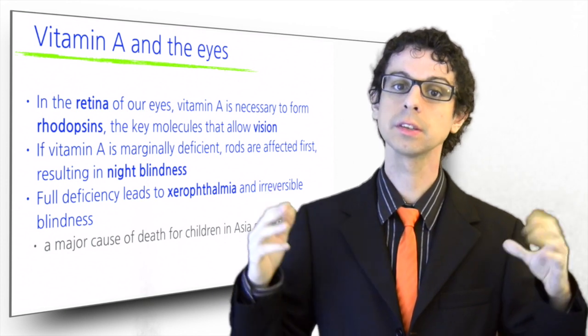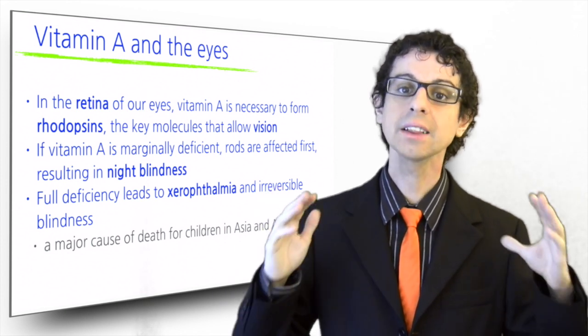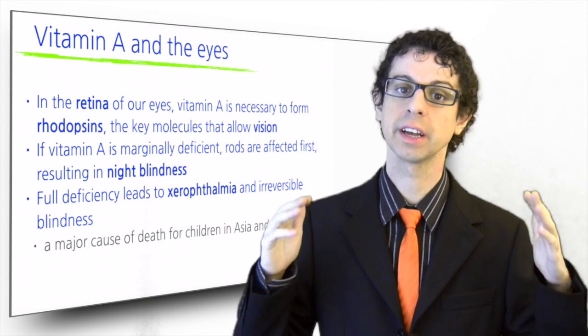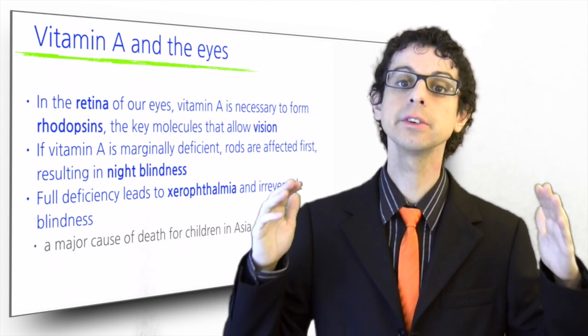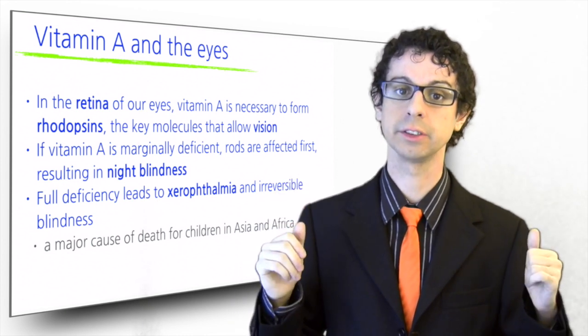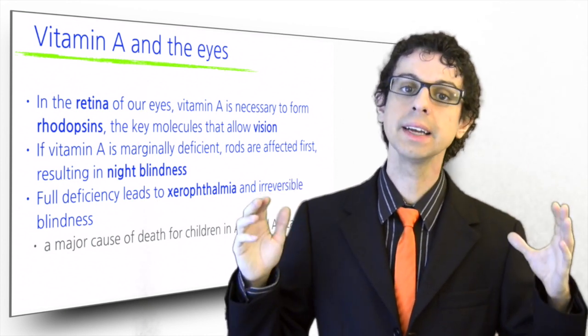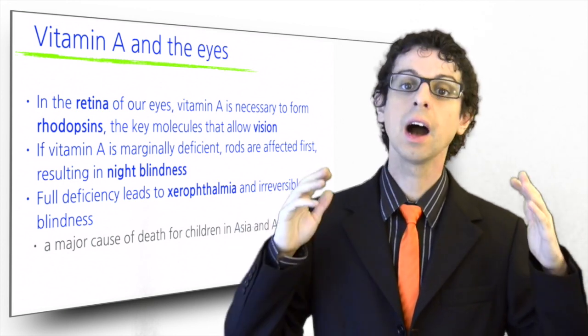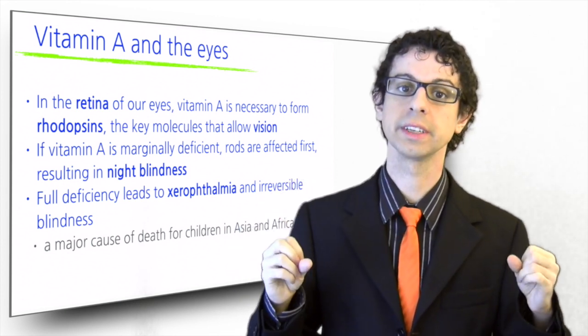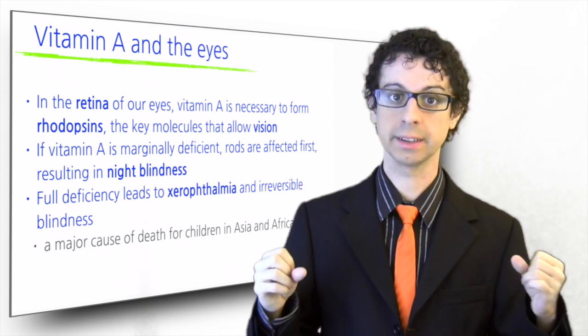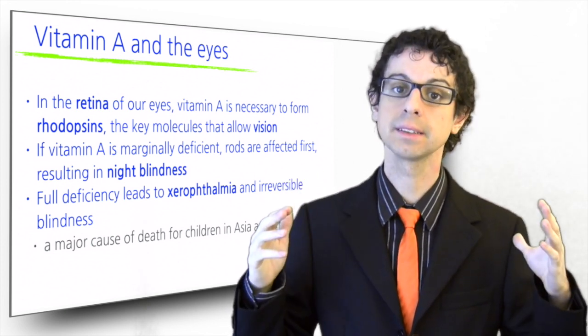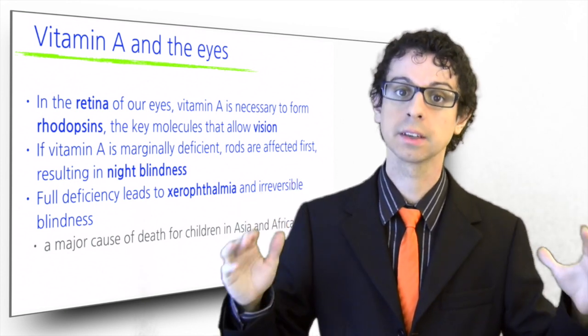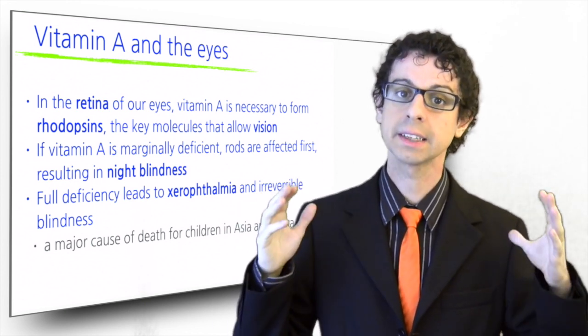Although this is not common in our post-industrialized rich countries, hundreds of thousands of children in less developed areas of Asia and Africa become irreversibly blind each year because of vitamin A deficiency. As vitamin A deficiency also makes them more susceptible to infections, about two-thirds of these children eventually die, an especially unfair fate if you consider that a vitamin A supplement, given a couple of times a year, at the cost of a few cents, would be enough to save their sight and their life.